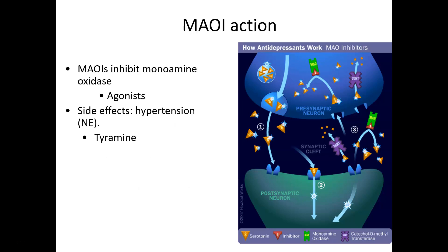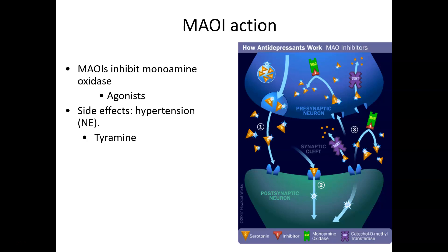MAOIs — monoamine oxidase inhibitors — work by inhibiting the enzyme that breaks down monoamines like dopamine, norepinephrine, and serotonin. An inhibitor attaches to the monoamine oxidase molecule so it can't break down these molecules. Because of that, MAOIs act as agonists, enhancing the effect of all monoamines. Common examples include phenelzine, sold as Nardil, and selegiline, also known as L-deprenyl or EMSAM. A major side effect is high blood pressure, especially because norepinephrine is being enhanced.